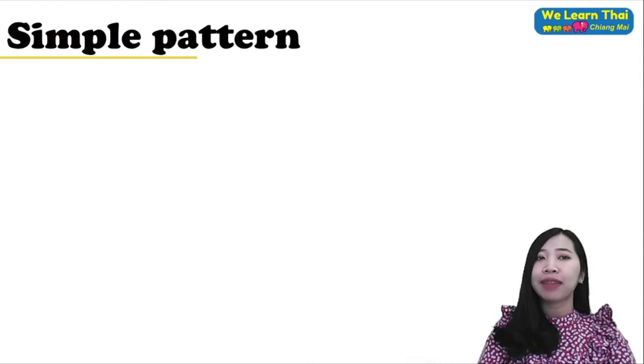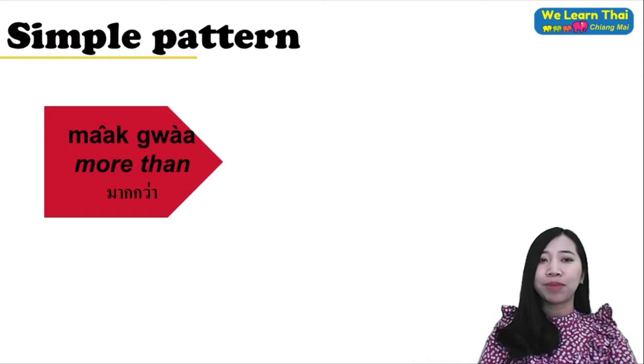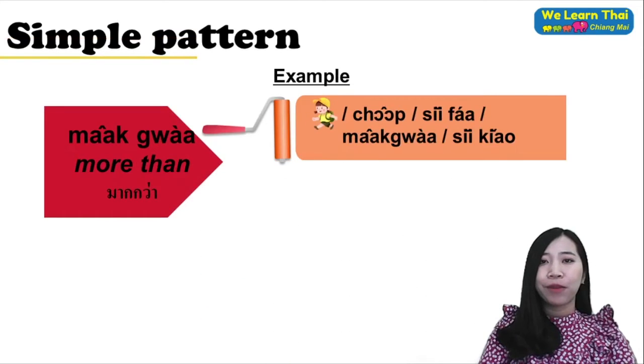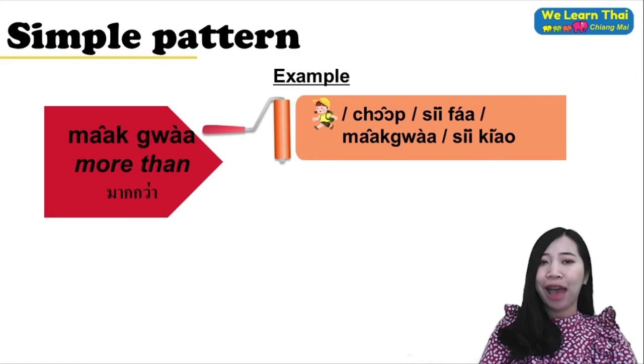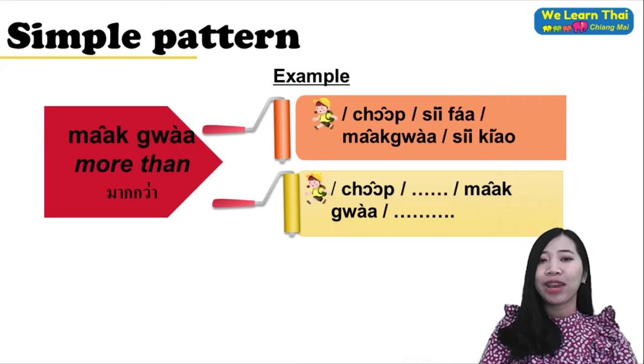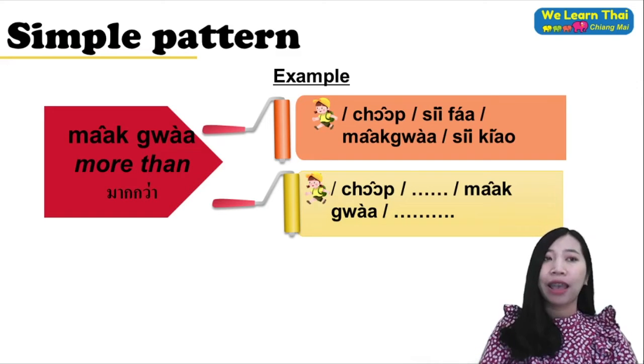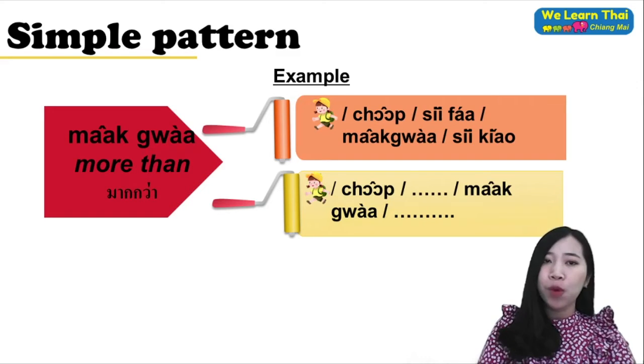Simple patterns: We have the word mak gwa, which means more than. For example, di chan chop see fah mak gwa see kheow. Or you can change like di chan chop see dang mak gwa see muang.